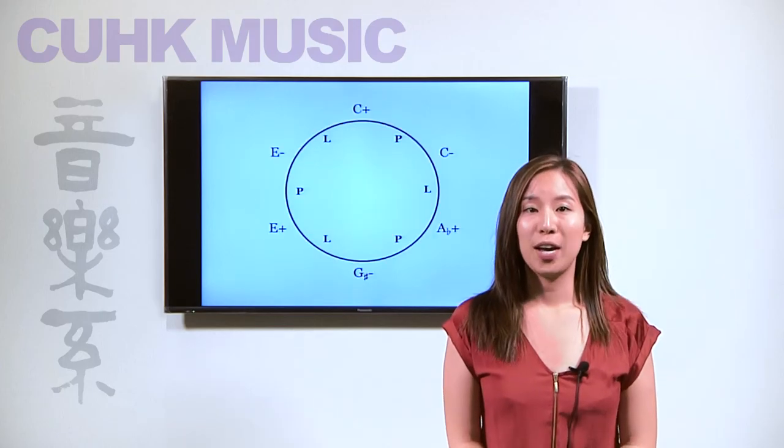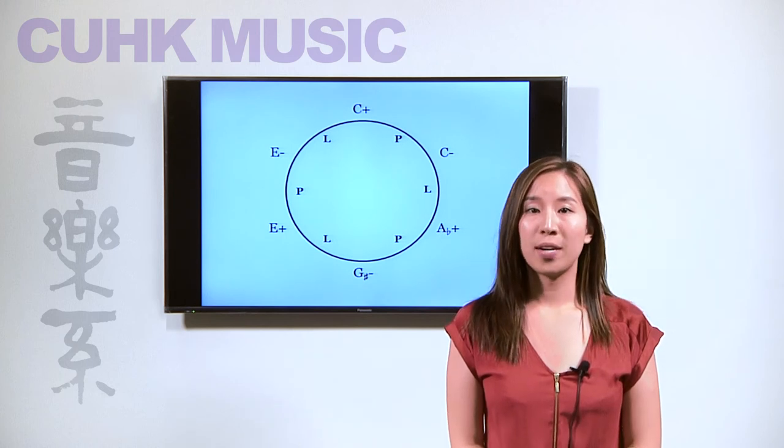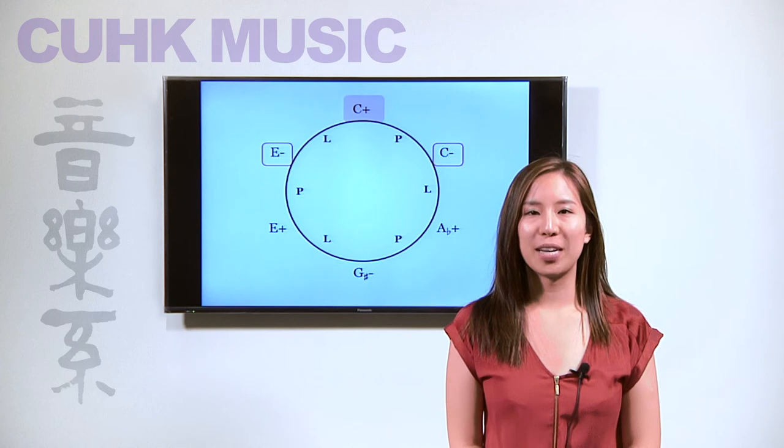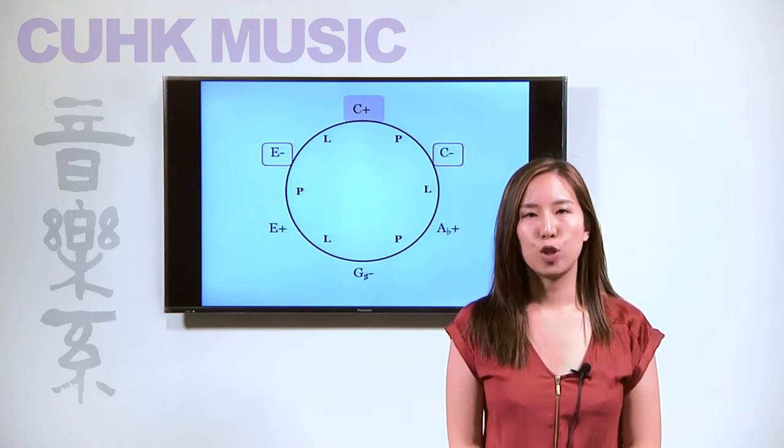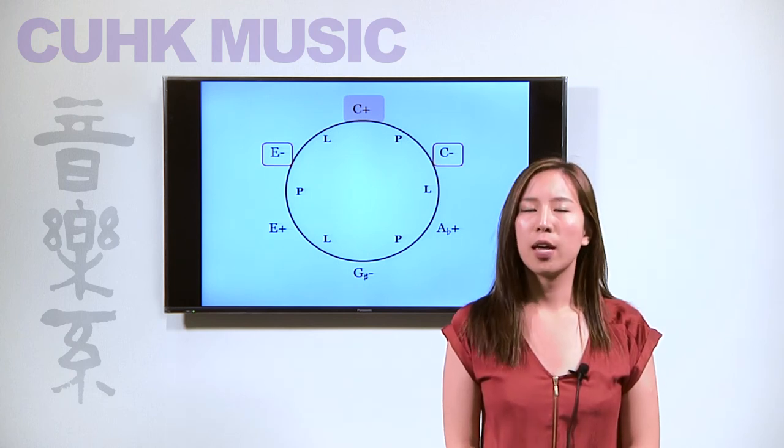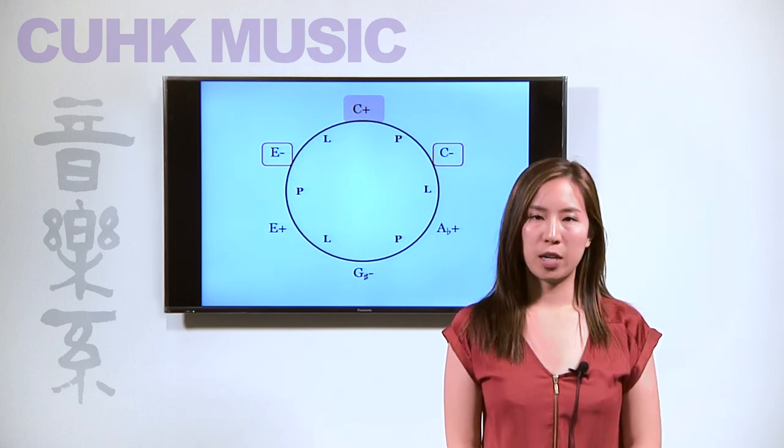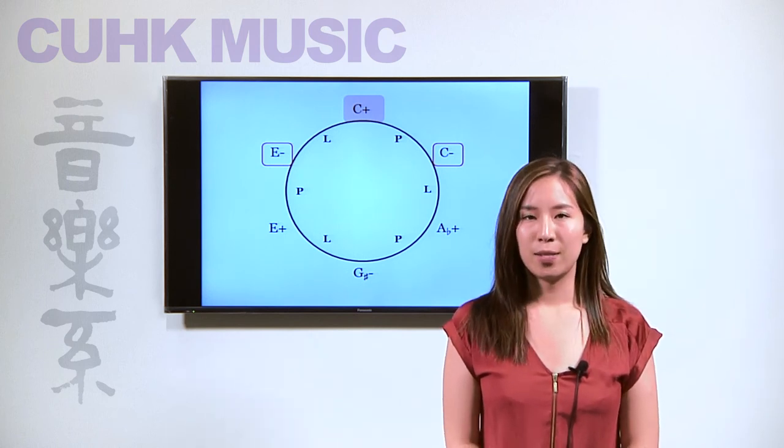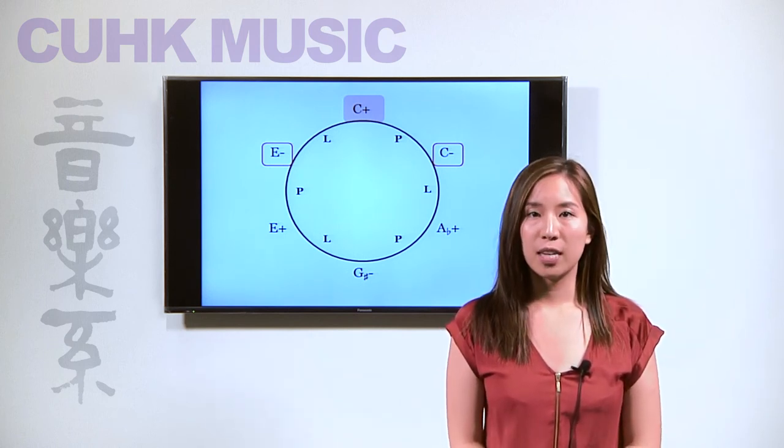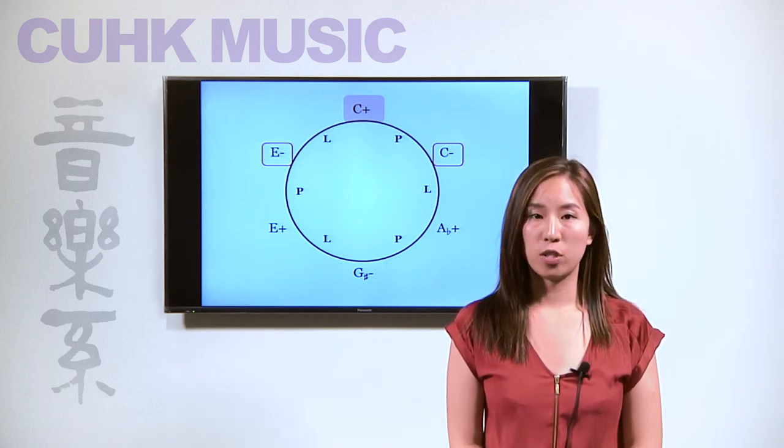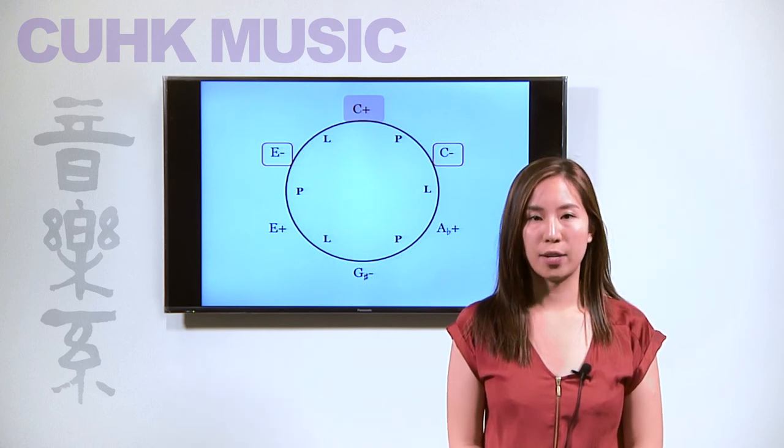Within a cycle, the triads that are adjacent to one another are related by a single pitch class displacement, hence two common tones, and they are modally mismatched. In other words, one is major while the other one is minor. Hence, the C minor and E minor triads have a single semitonal voice exchange with reference to the C major triad.